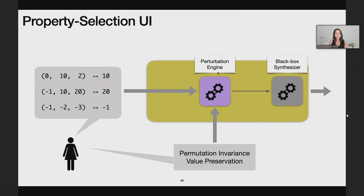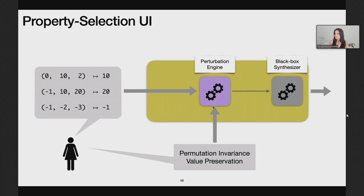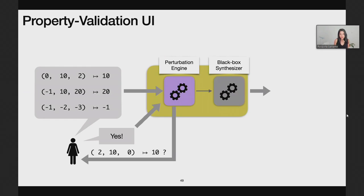In the property selection UI, the design of the synthesizer is the simplest because the user does a lot of work. For each user-provided property, our engine essentially implements our key strategy: it applies the property to perturb the user-provided examples and then simply uses the existing synthesizer to synthesize a program from the resulting augmented set of examples. We introduce a perturbation engine that takes care of this key strategy. In the property validation UI, if the user validates examples perturbed according to a certain property, our engine assumes that property holds and proceeds as before with the perturbation engine and an existing inductive synthesizer.